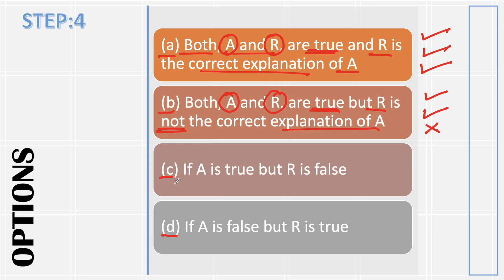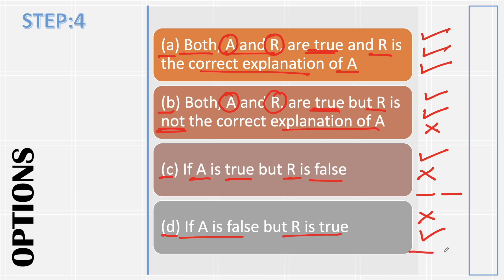Option C says: if A is true but R is false — जब A ठीक है और R गलत है. अगर कोई भी assertion और reason में से कोई एक गलत होता है, तो हम third वाला step छोड़ देते हैं. Option D says: if A is false but R is true — यानि assertion गलत है but reason सही है, और third step हम छोड़ देते हैं. तो ये है हमारे options का pattern.